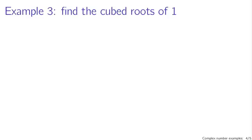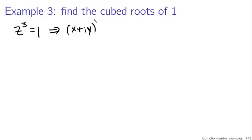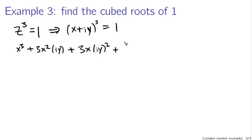As a slightly more involved example, consider finding the cubed roots of one. You know one cubed is one — that's a good place to start. What we're trying to do is solve z cubed equals one, where z equals x plus iy, with x and y real numbers. Now if we expand out this cubic, we get x cubed plus 3x squared times iy plus 3x times (iy) squared plus (iy) cubed, and this has to equal one.